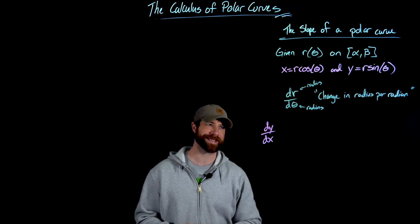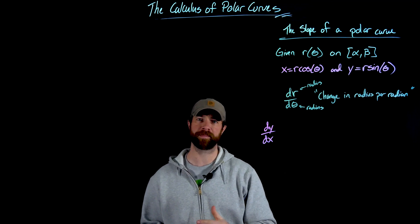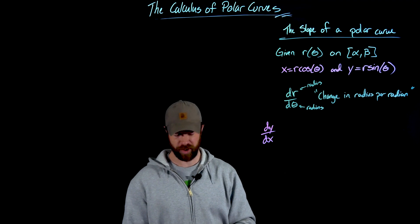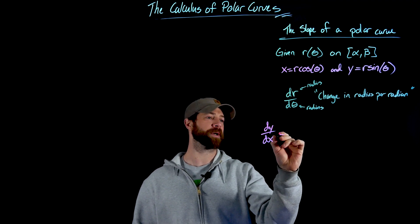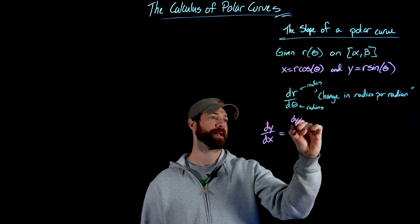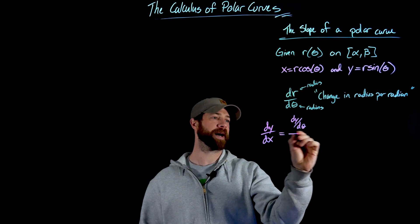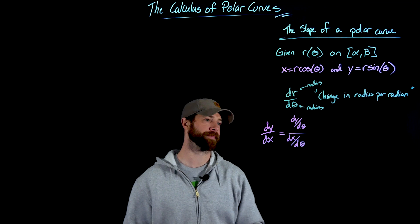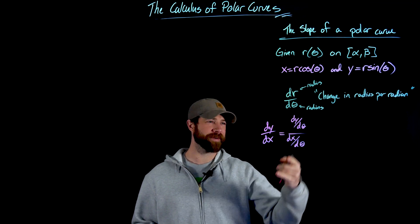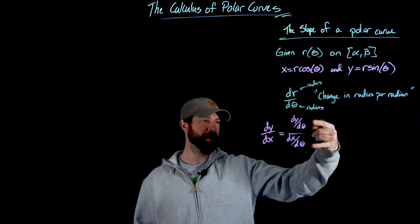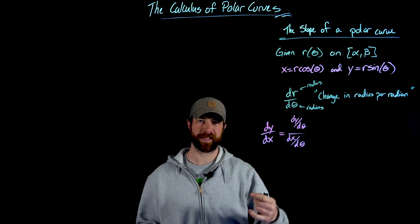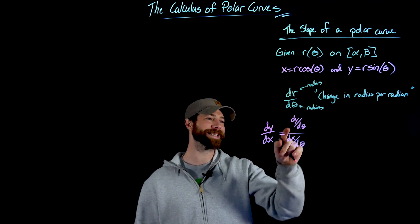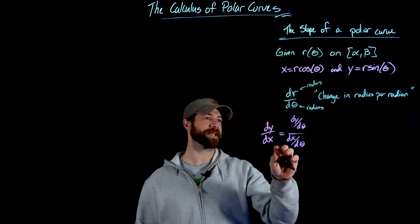What we're going to do is exactly the same treatment that we did with parametric equations. In order to compute dy/dx, we're going to compute dy/dθ and divide that by dx/dθ. We can easily verify these are equal just by multiplying both the numerator and denominator by dθ, canceling out that dθ differential.